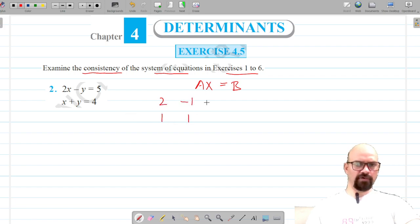Matrix A is 2 negative 1, 1, 1. Vector x is x, y, and vector b contains the constants 5, 4.